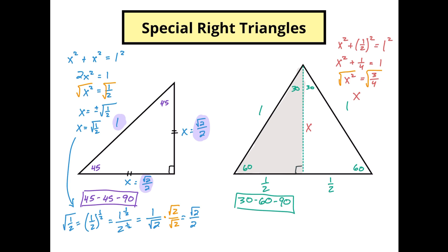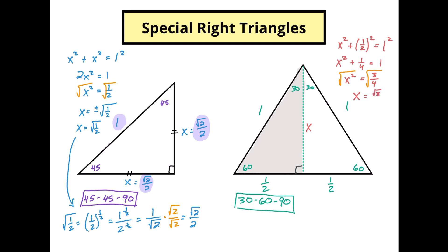Since I can only have a positive distance, x equals the square root of 3/4. The square root of 4 is 2, so x equals √3 over 2. So x here is equal to √3/2.